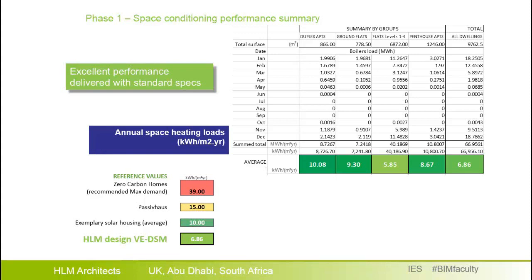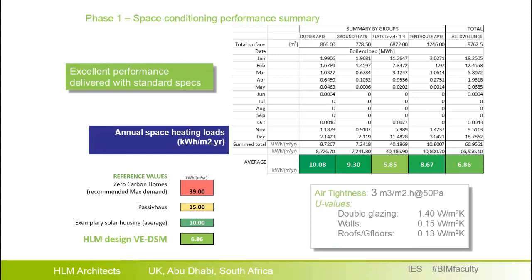Most importantly, this performance was obtained without any special specification in the fabric or glazing beyond high air tightness — more or less standard values, still good of course. It is interesting that we are achieving this with standard double glazing, while a Passive House scheme would have required triple glazing as mandatory. This is what we think is the difference provided through detailed analysis.